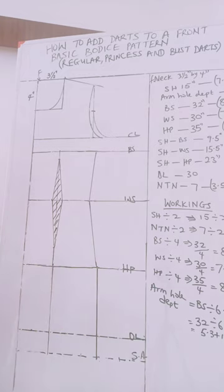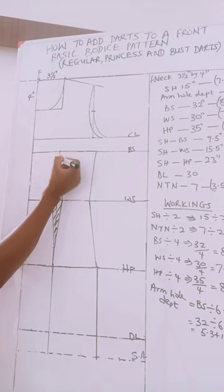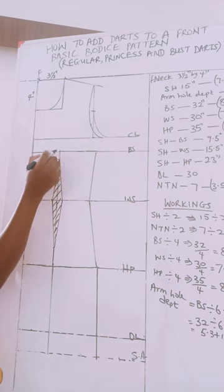The princess dart is simple. Now let's go to the princess dart. The princess dart goes to start from the armhole curve and end at this point, not on the bust line directly because we want that place to be free.